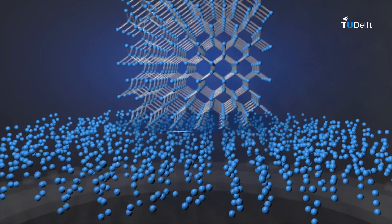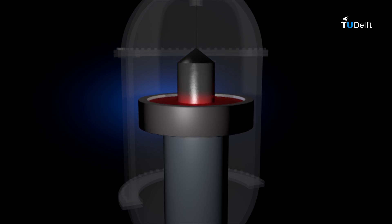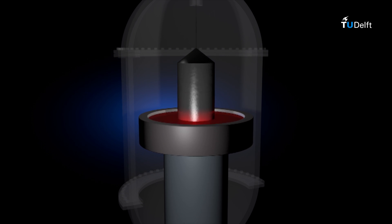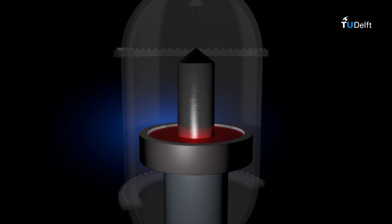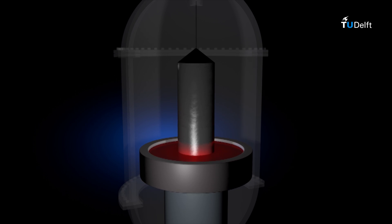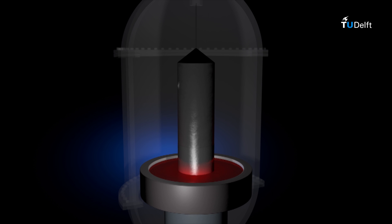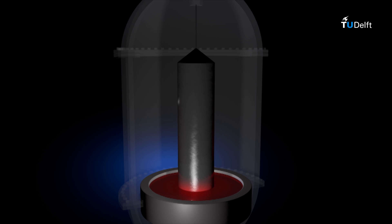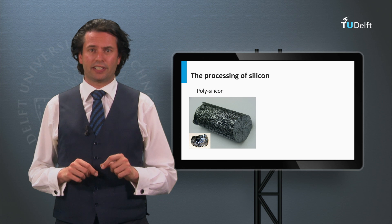This large single crystalline silicon block is called an ingot. In this process, temperature gradients, rate of pulling, and speed of rotation are precisely controlled. Nowadays, crystal ingots of diameters of 200 mm and 300 mm with lengths of 2 meters can be produced. To prevent incorporation of impurities, this process takes place in an inert atmosphere like argon gas. The crucible is made from quartz, which partly dissolves in the melt; consequently, Czochralski monocrystalline silicon has a relatively high oxygen level.